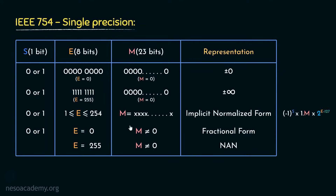Apart from those, when the exponent is 0 and the mantissa is not equal to 0 — that is, in the 23-bit mantissa we have any bit pattern except all 0s — that will represent the fractional form or denormalized form. This is the form of pure fractions where there is no integer part. The formula is: minus 1 raised to the power of the sign bit, multiplied by 0.M — which specifies the pure fraction — multiplied by 2 raised to the power of minus 126.